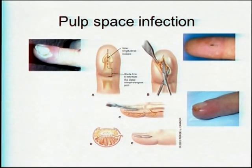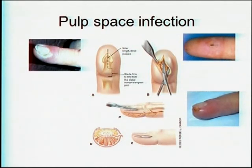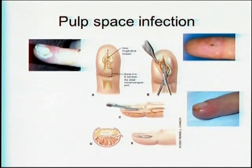Coming first to the pulp space infections. First is Paronychia, then Felon, and then Herpetic Whitlow. It is important to differentiate between the three, because for Felon and Paronychia you need to drain them, whereas for Herpetic Whitlow you can manage conservatively. For Paronychia, you need to put a knife exactly there, let the pus out, then put a warm soak and antibiotic, and start finger movements normally after three to four days.